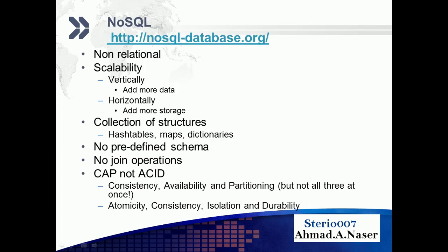A NoSQL database is first non-relational. It is scalable, whether vertically by adding more compute or horizontally by adding more storage. A NoSQL database is a collection of structures, whether hash tables, maps, dictionaries, or documents.